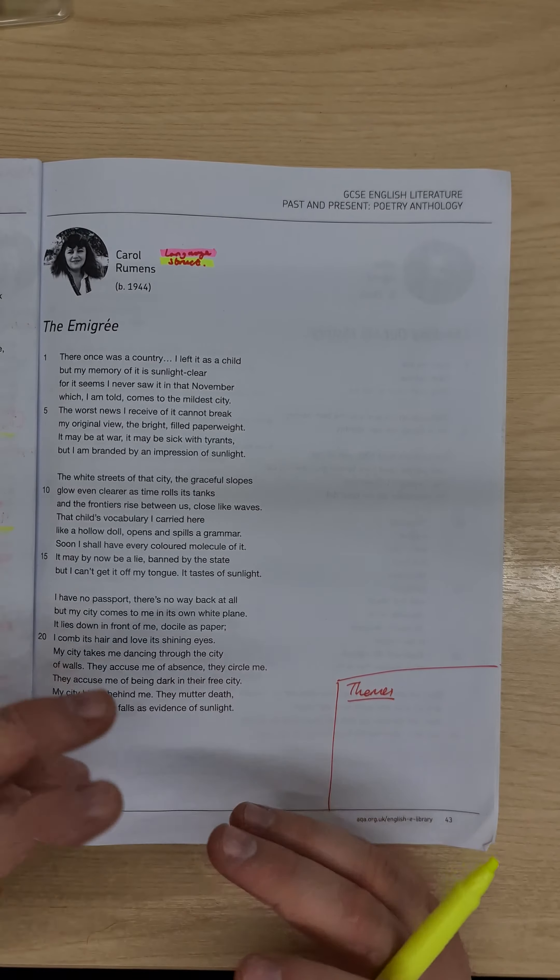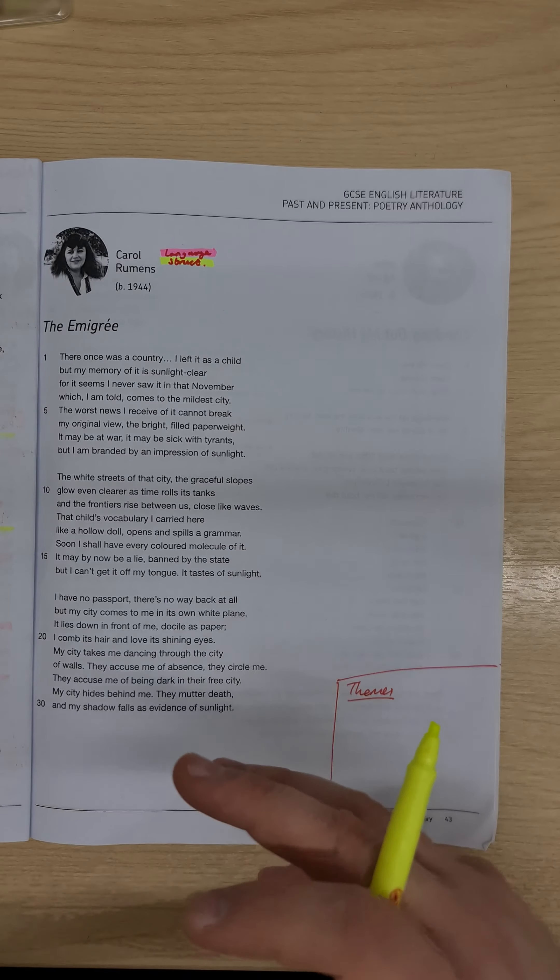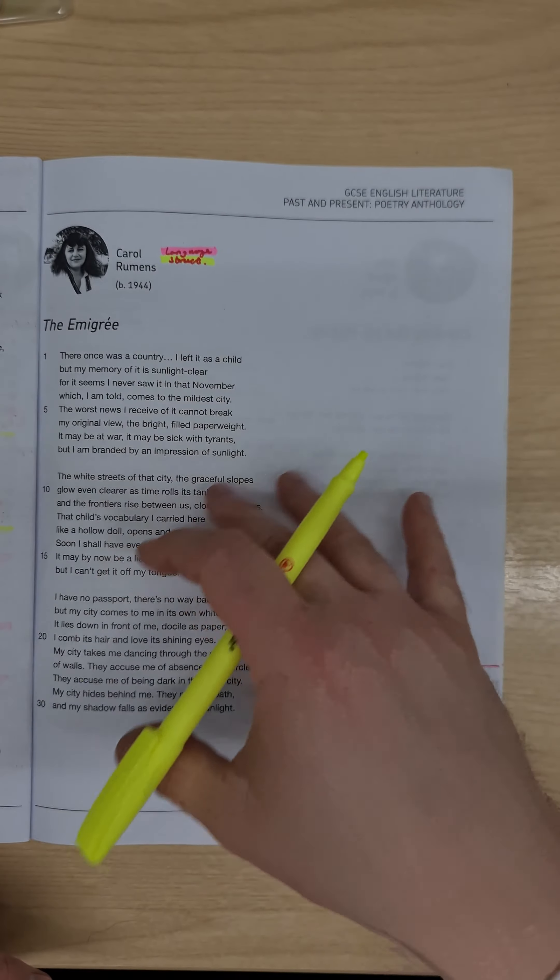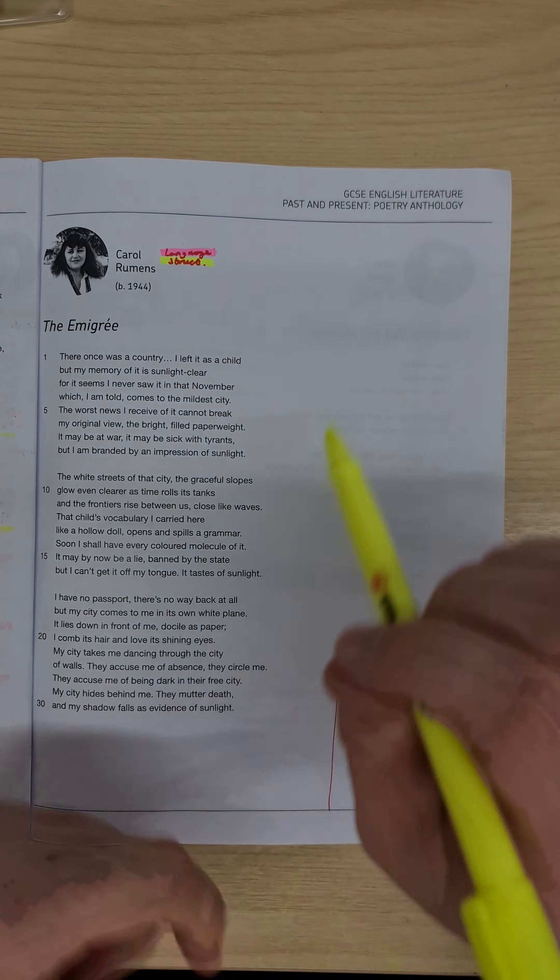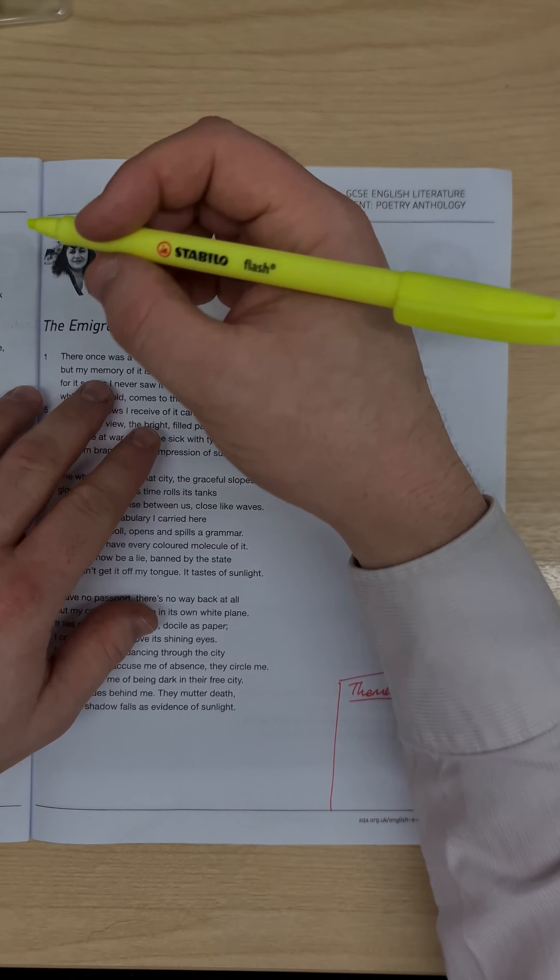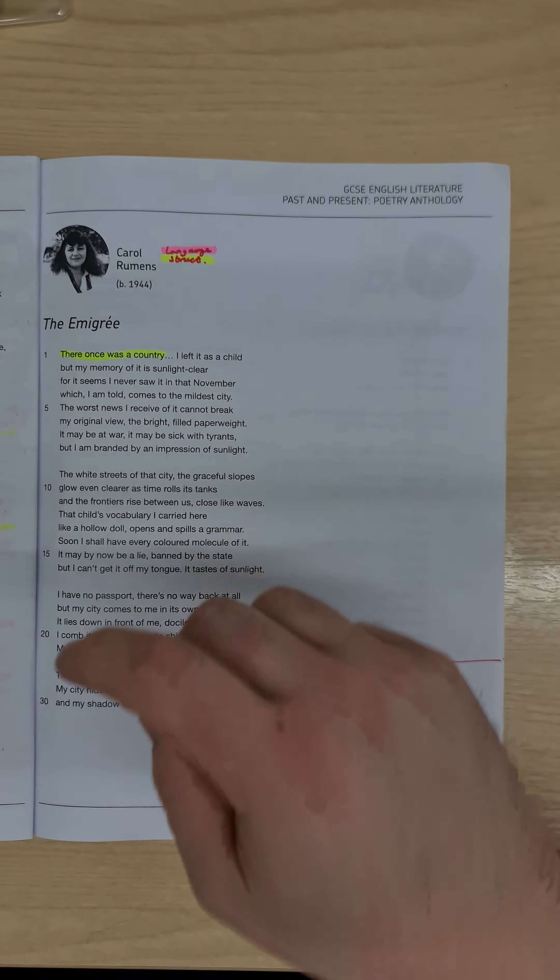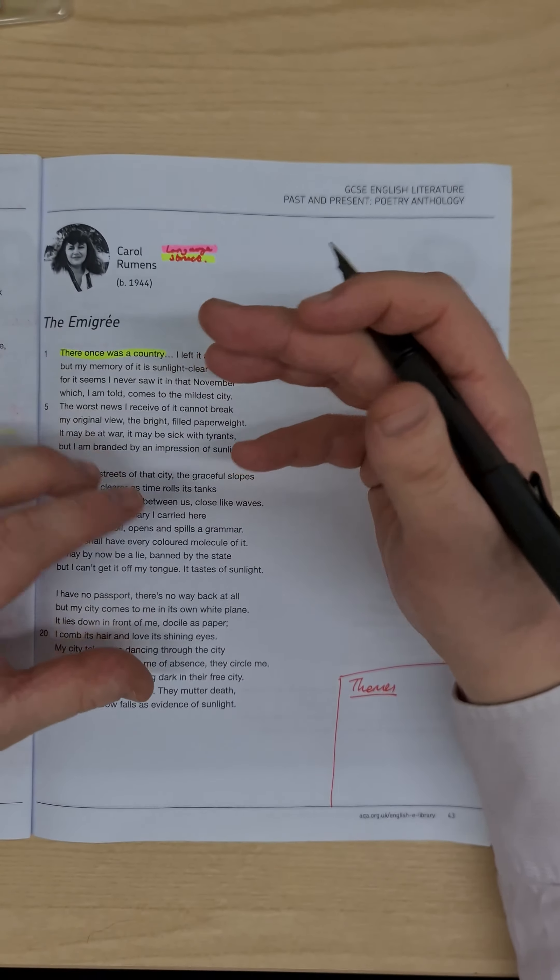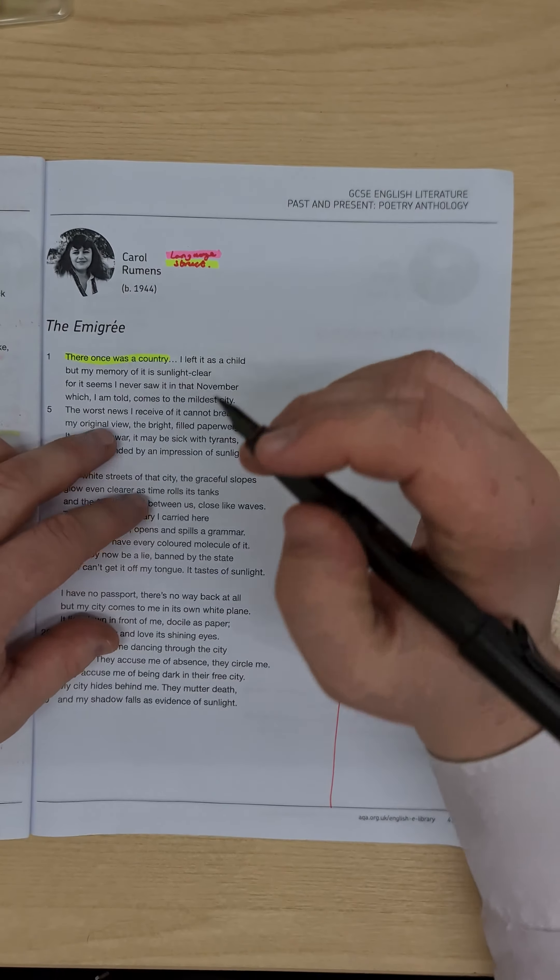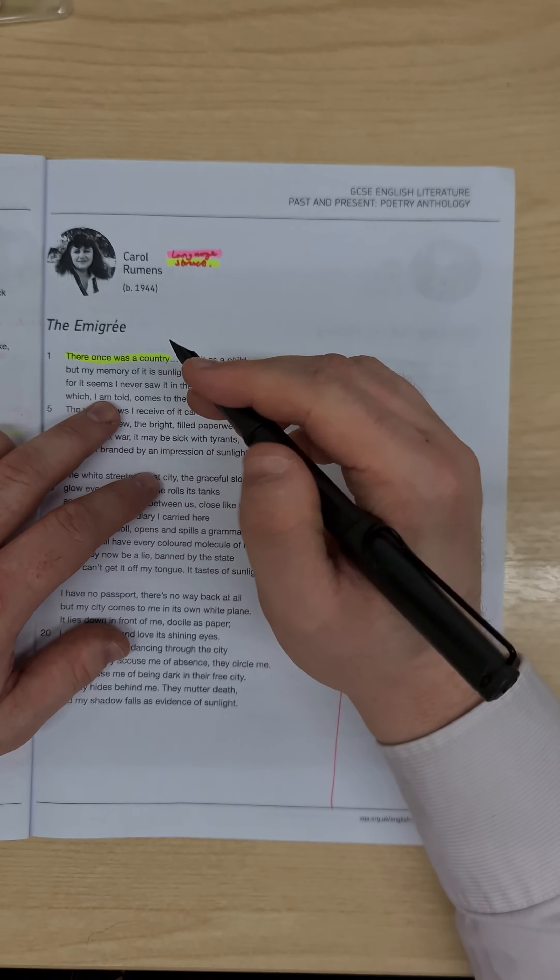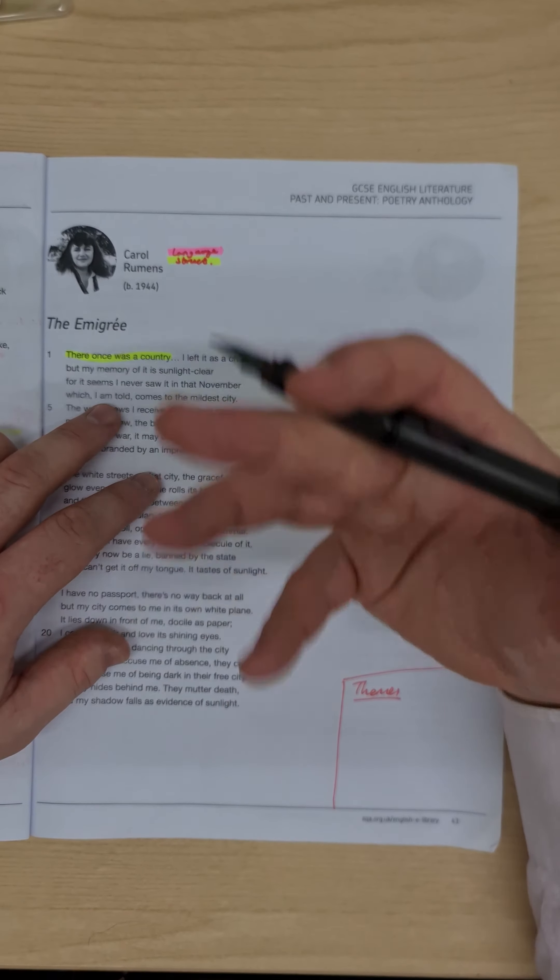We have this idea that the speaker's memory of the city grows and solidifies as the poem moves on, and this is enhanced by the structure of the poem. So the first note would be, the opening makes it sound like a story, but the fact that we have the past tense, there once was a country, gives this sense of loss.